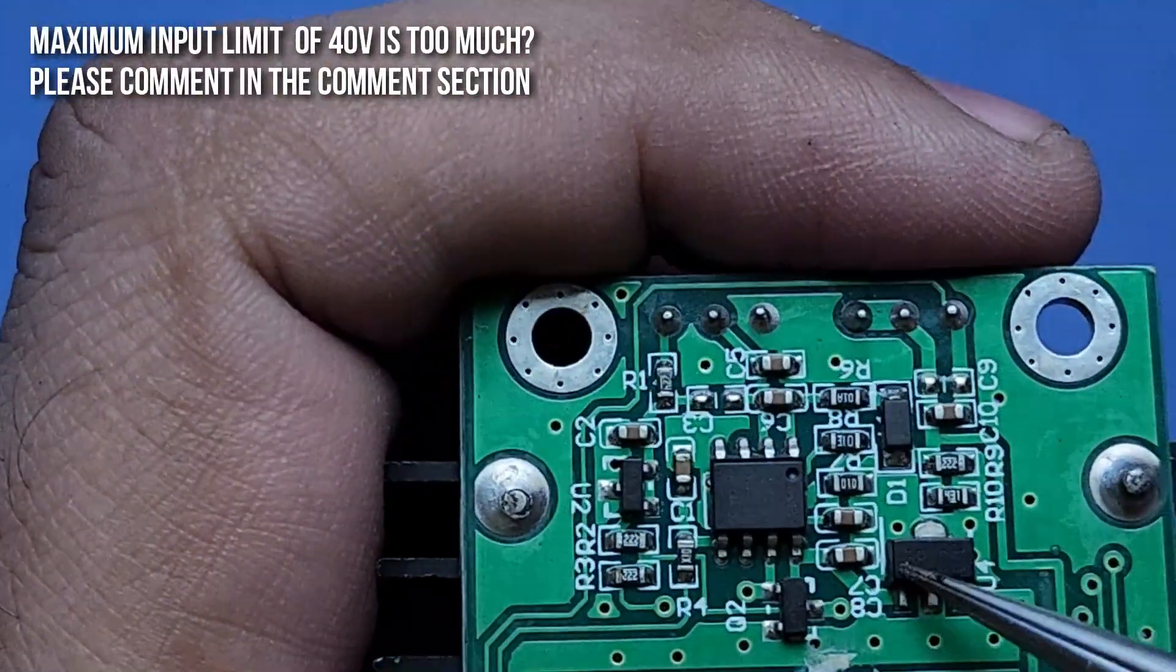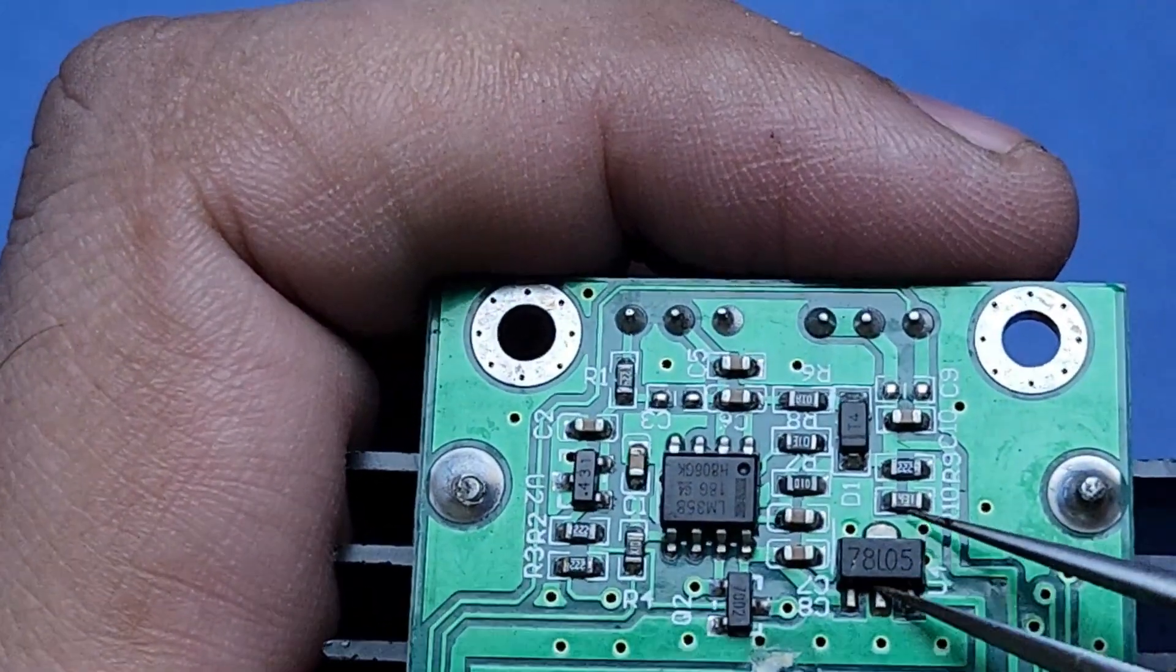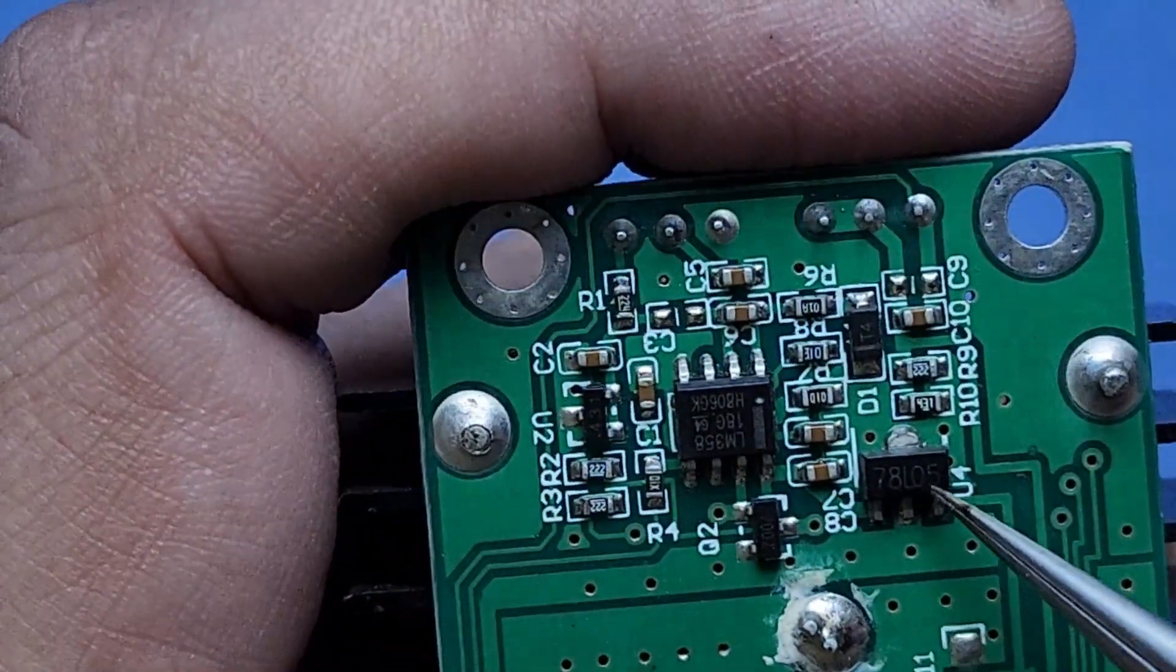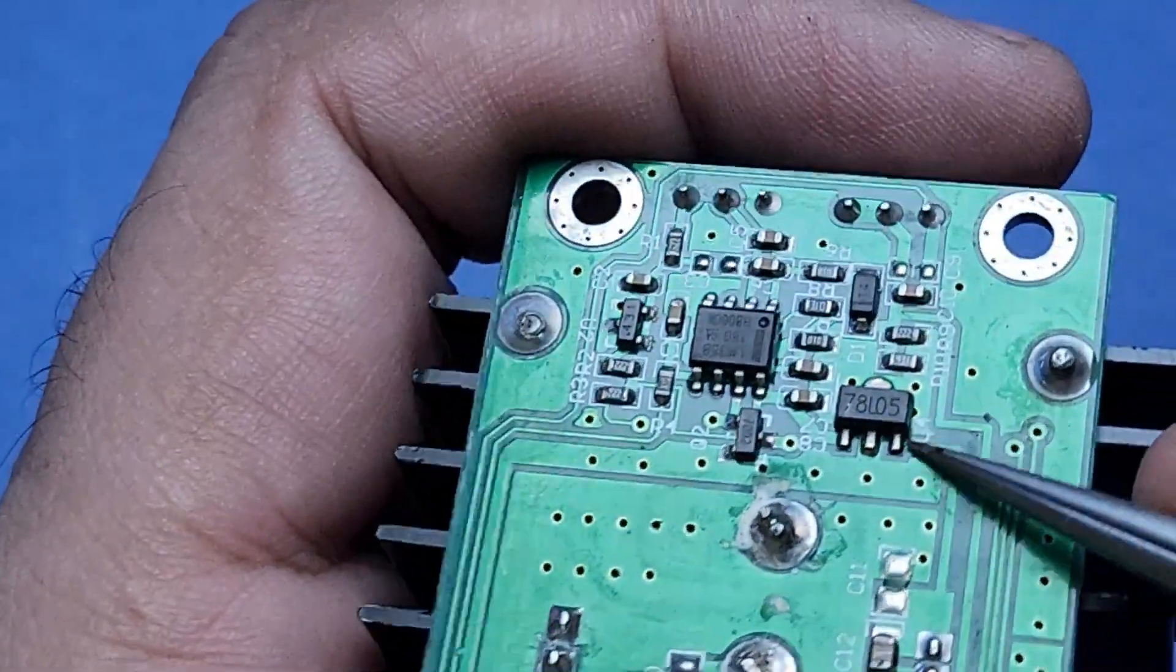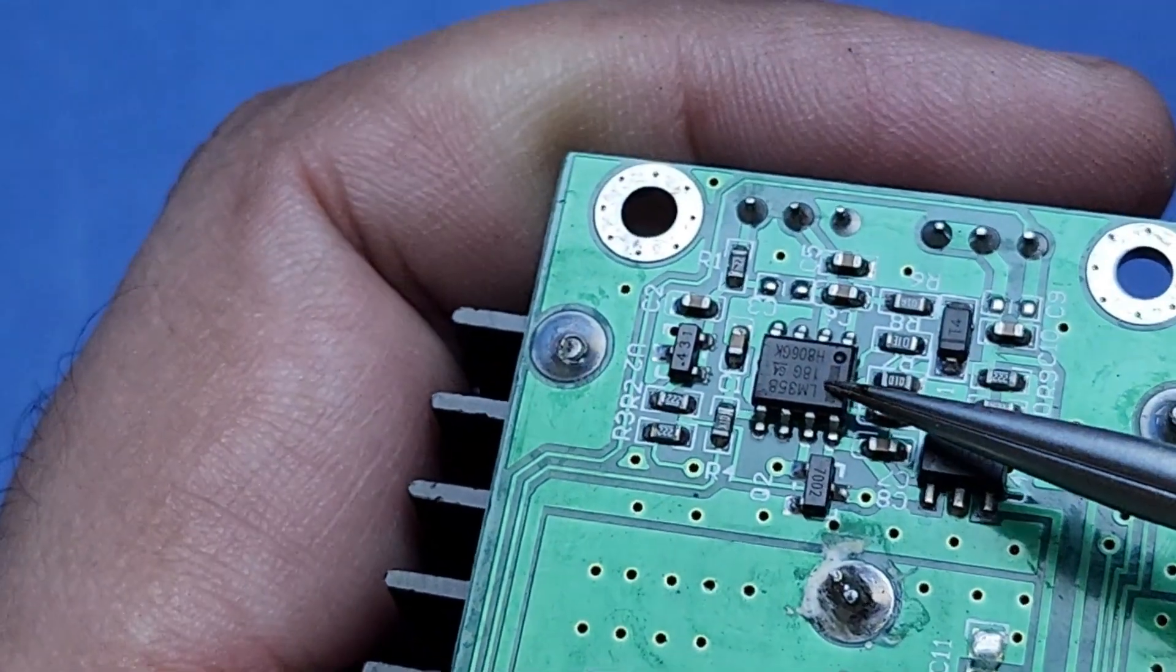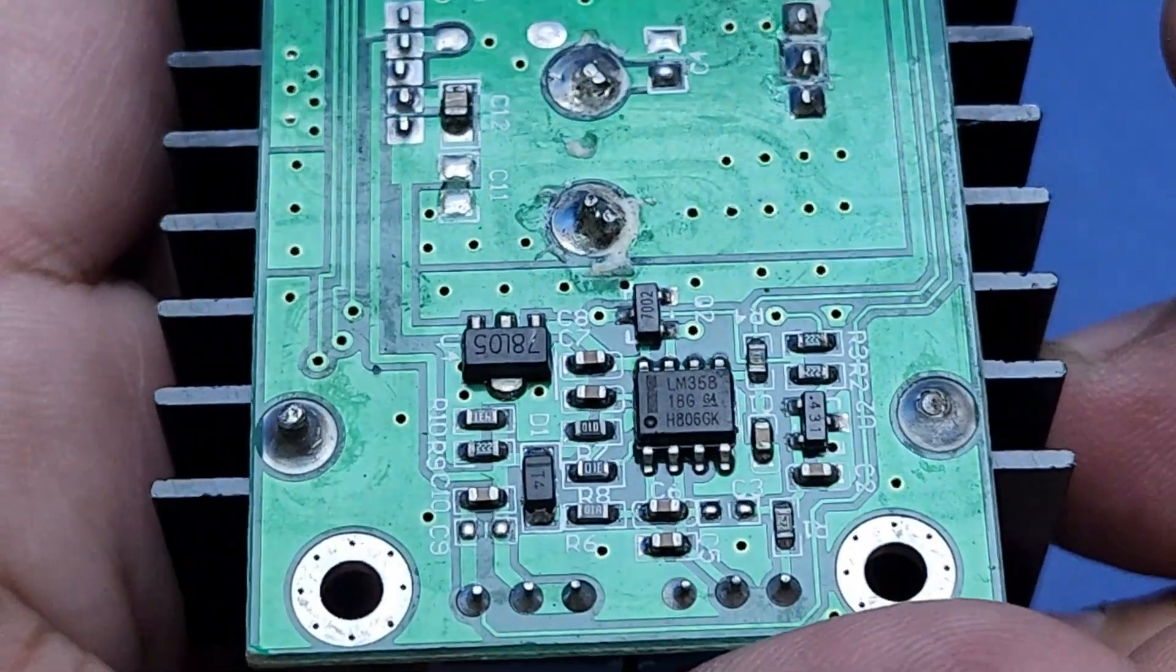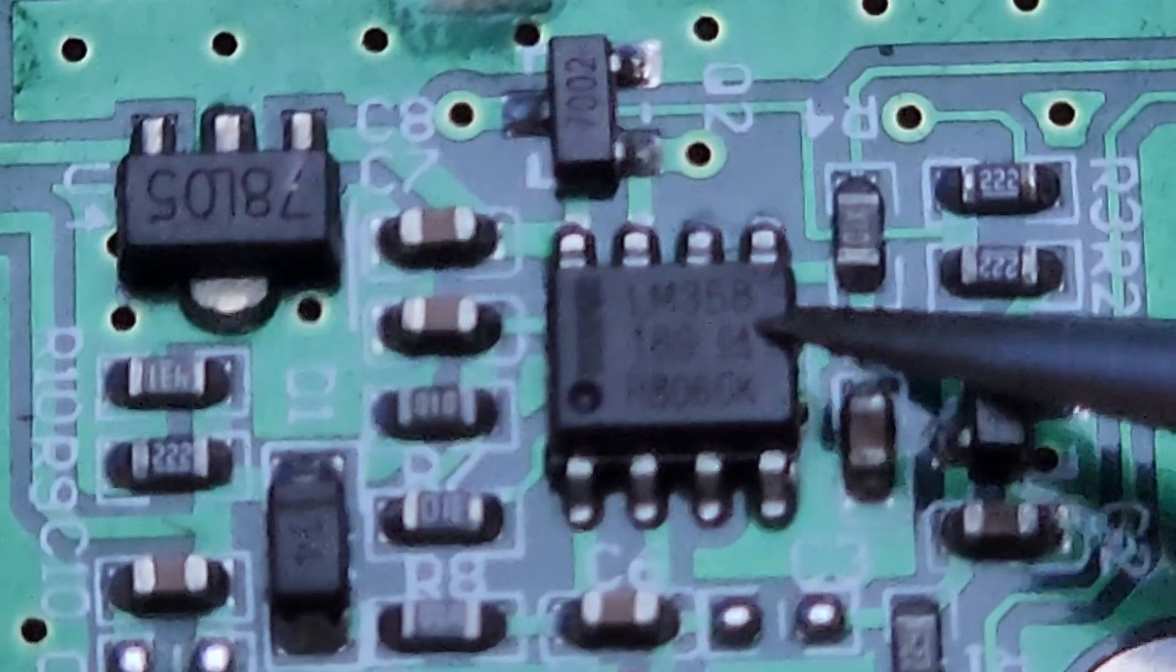Now I want to mention a concern I have about the maximum input voltage of this XL4016 module. As you can see, there is an LM78L05 voltage regulator present on this module along with this LM358, which is an operational amplifier. We know that both of these are only suitable to work at 30 volts or below, so it seems to me that the components on this module will be over stressed if you try to reach its maximum input limit of 40 volts.